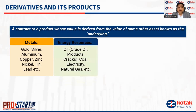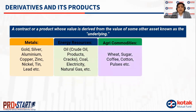Similarly, you have energy resources as underlying, where it could be oil — which is crude oil — or products or cracks. It could also be coal, electricity, natural gas, etc. Then there are agri-commodities like wheat, sugar, coffee, cotton, pulses, etc.